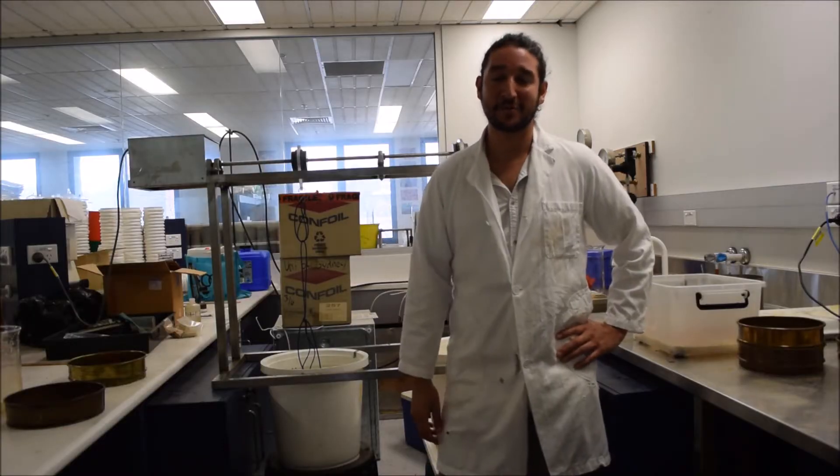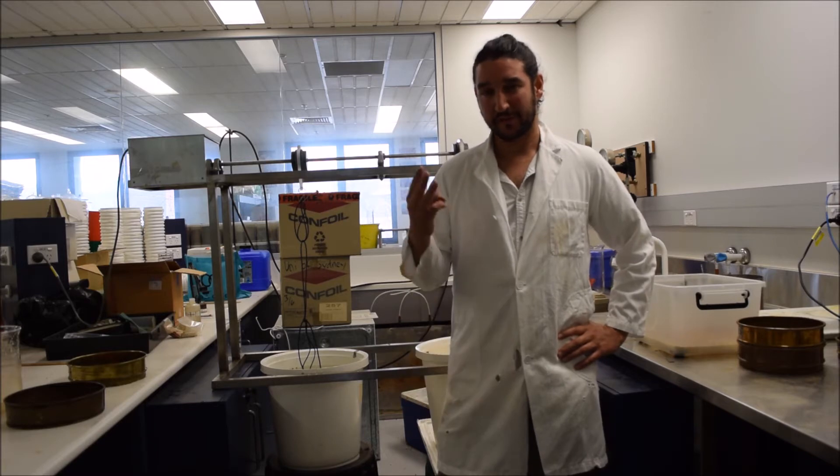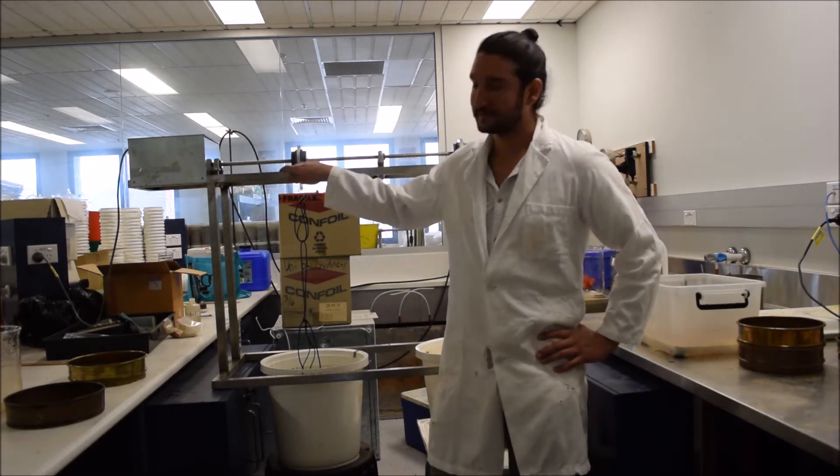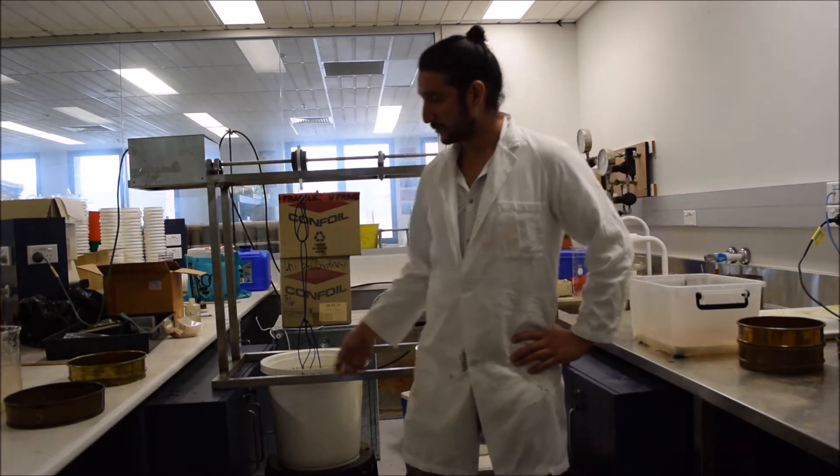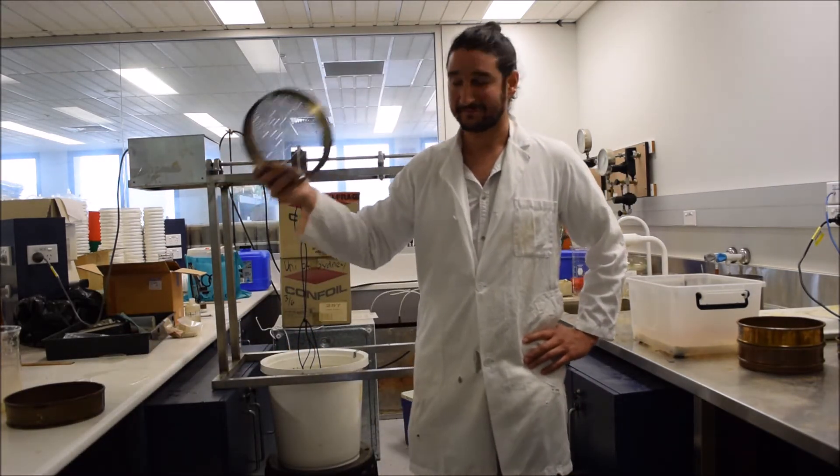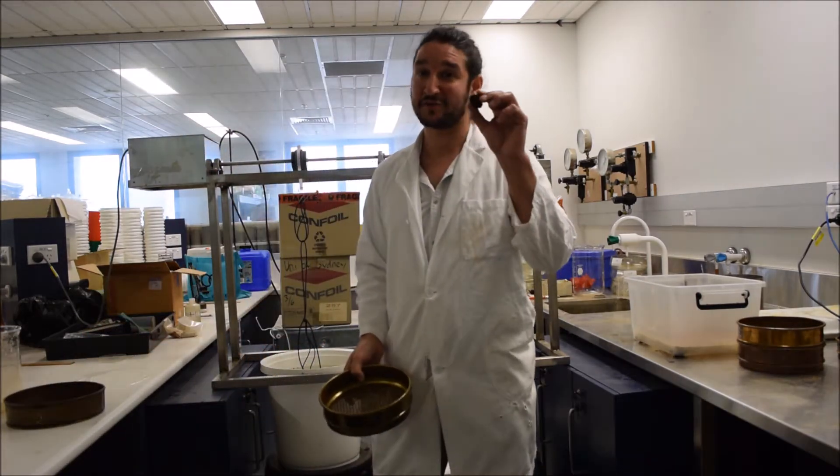So how do we measure soil aggregate stability in a soil lab? We need three things. Basically, this instrument over here, which is a set of pulleys and strings that will hold a sieve. And on top of the sieve, we have soil.